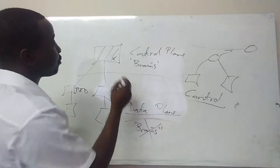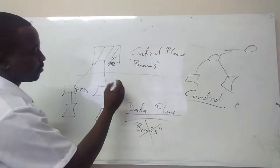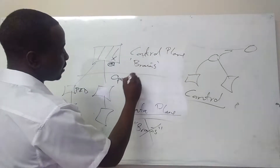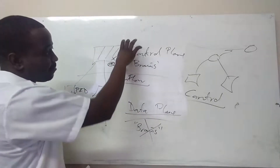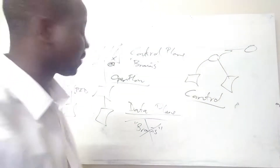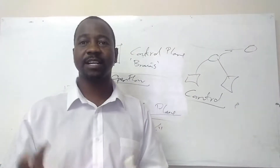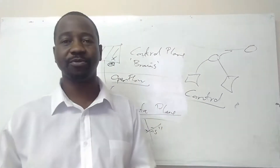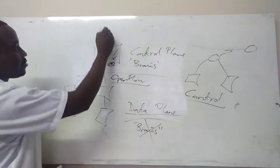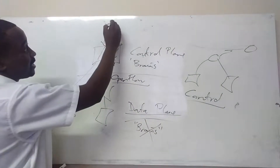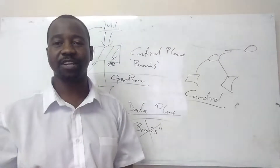The device on the control plane communicates with these devices using one of the protocols which is OpenFlow. OpenFlow is part of the communication protocol between the device that controls the whole network and the devices that are controlled by that one device. So as a network administrator, you don't have to jump from one device to another to configure it — all you have to do is have one management interface, and with this interface you gain complete control over the whole network.